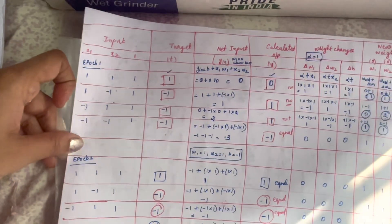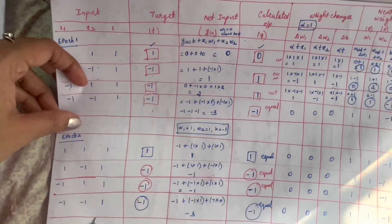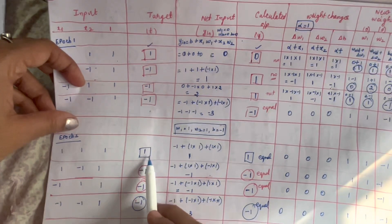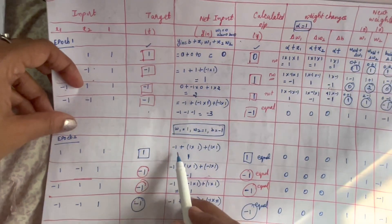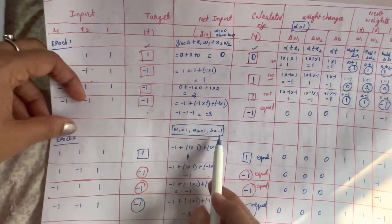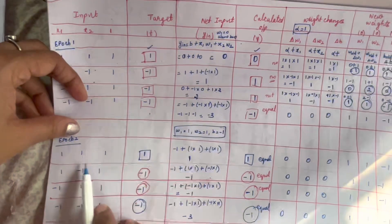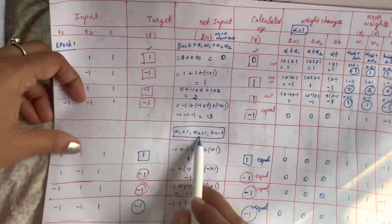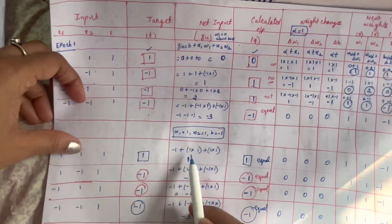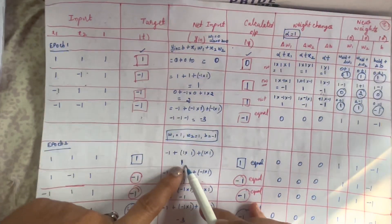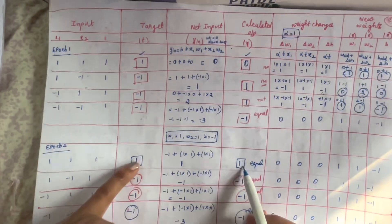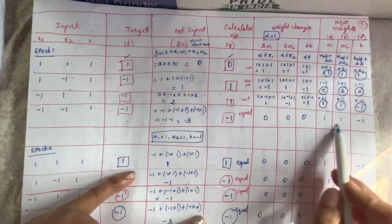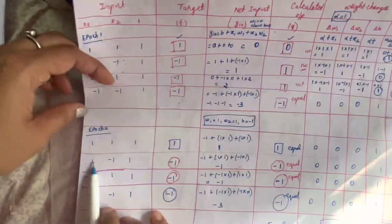In approach 2, we present all four input sets again. For the first input: x1=1, x2=1, bias=1, target=1. Using weights w1=1, w2=1, b=-1. y_in = -1 + 1*1 + 1*1 = -1 + 1 + 1 = 1. Since y_in = 1 > 0, y = 1. Comparing y=1 and t=1, they are equal, so no change in weights. Weight changes are 0,0,0 and the new weights remain w1=1, w2=1, b=-1.